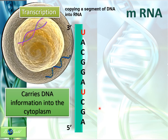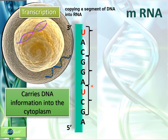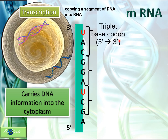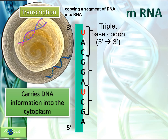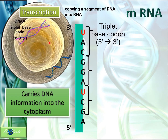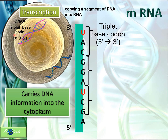We have to understand what is the code that is being transcribed onto the mRNA. To read the code, we have to read it 3 by 3 — this is called the triplet base codon — and it has to be read from the 5' to the 3' direction. Meaning it must be read as GCU and not UCG. On the DNA, the sequence of nitrogen bases is called the triplet base code. In the mRNA, it is called the codon. On the DNA the direction is from 3' to 5', whereas in the mRNA it is from the 5' to 3' direction.